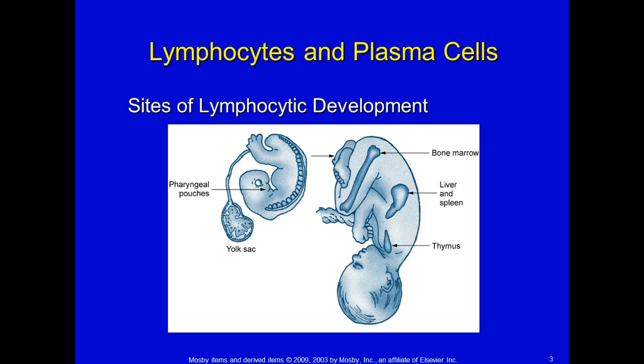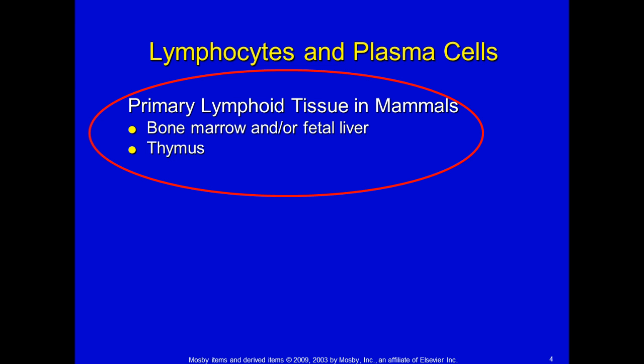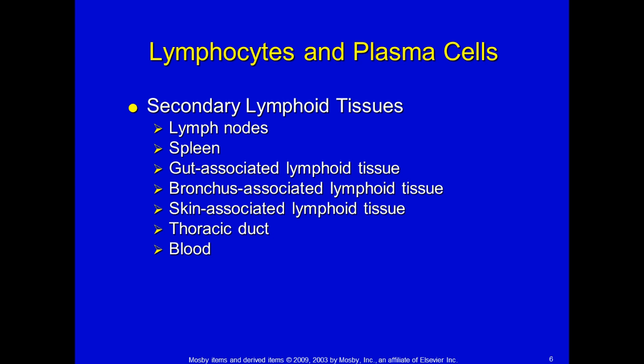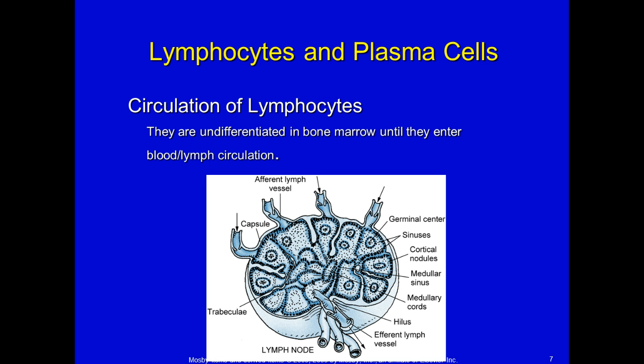Let's look at the sites of lymphocytic development. The yolk sac is the first primary site of cell development, then it heads to the liver and the spleen, and then to the bone marrow. The primary lymphoid tissue in mammals is the bone marrow or the fetal liver, then further development occurs in the thymus. Secondary lymphoid tissue — where cells may be stored after they've been exposed to something — includes lymph nodes, spleen, the GALT or gut-associated lymphoid tissue, bronchus-associated lymphoid tissue.